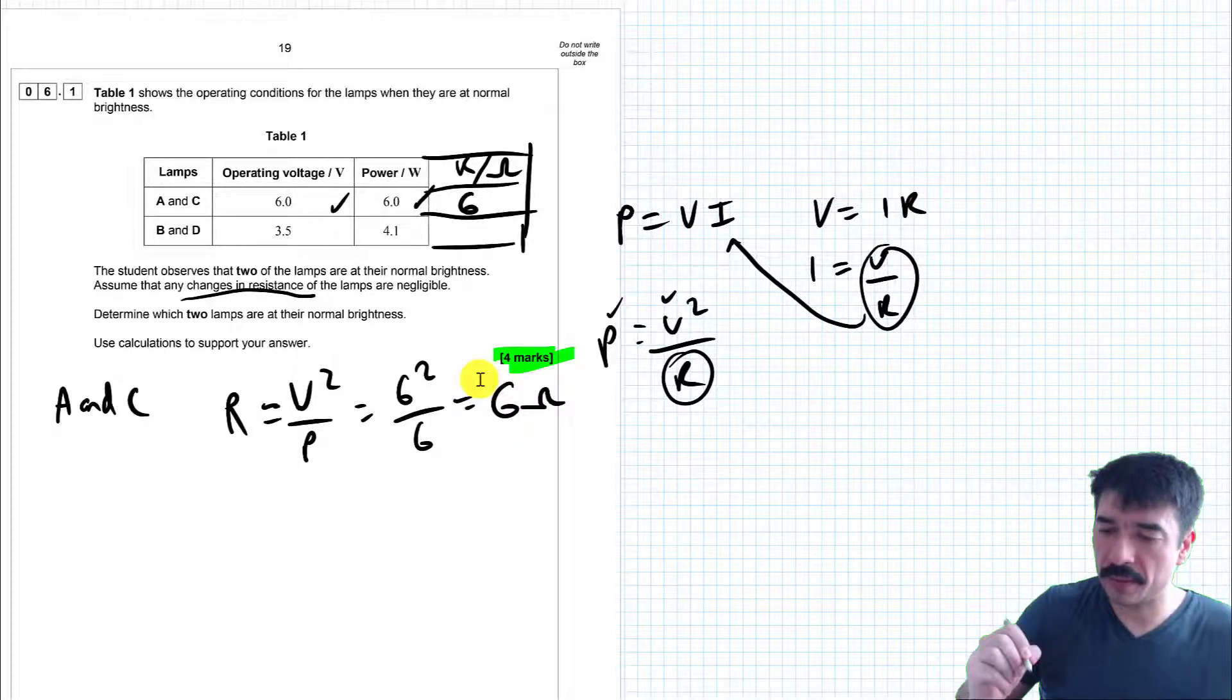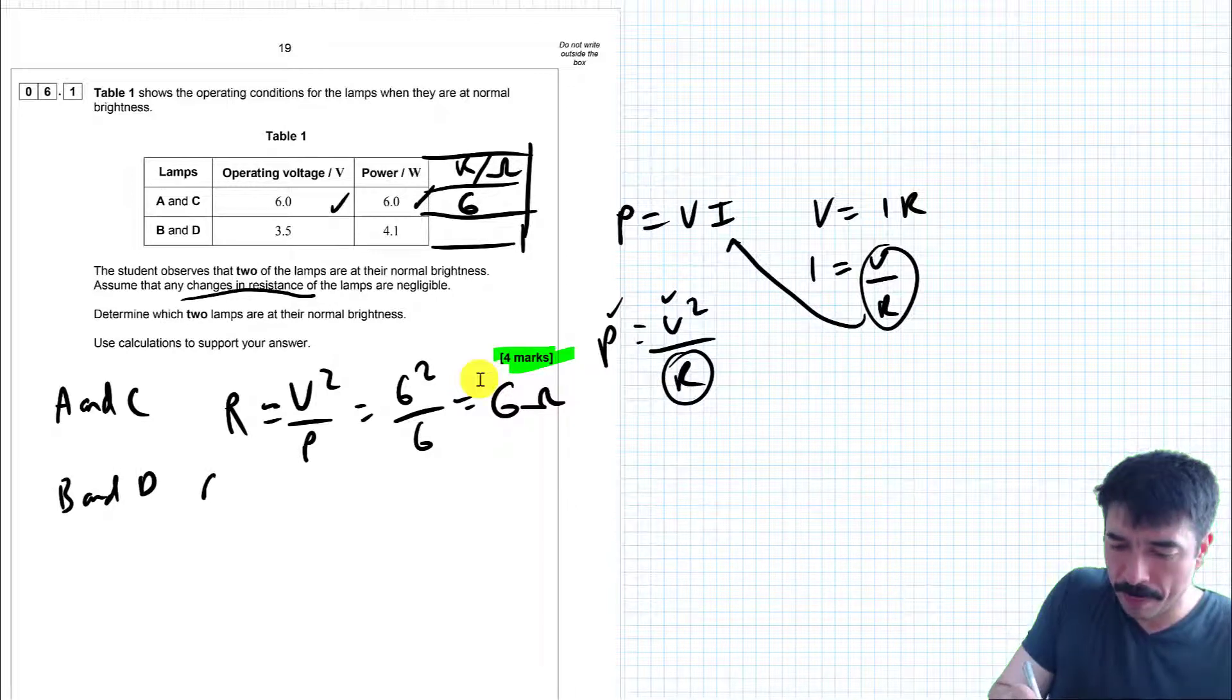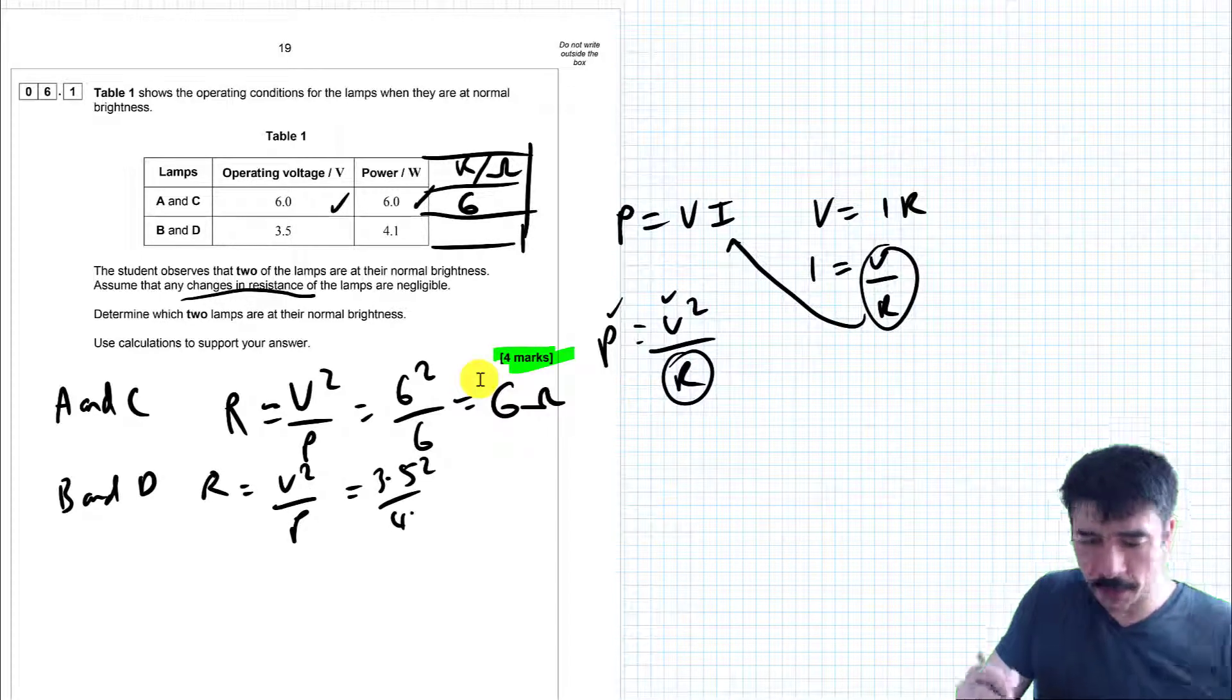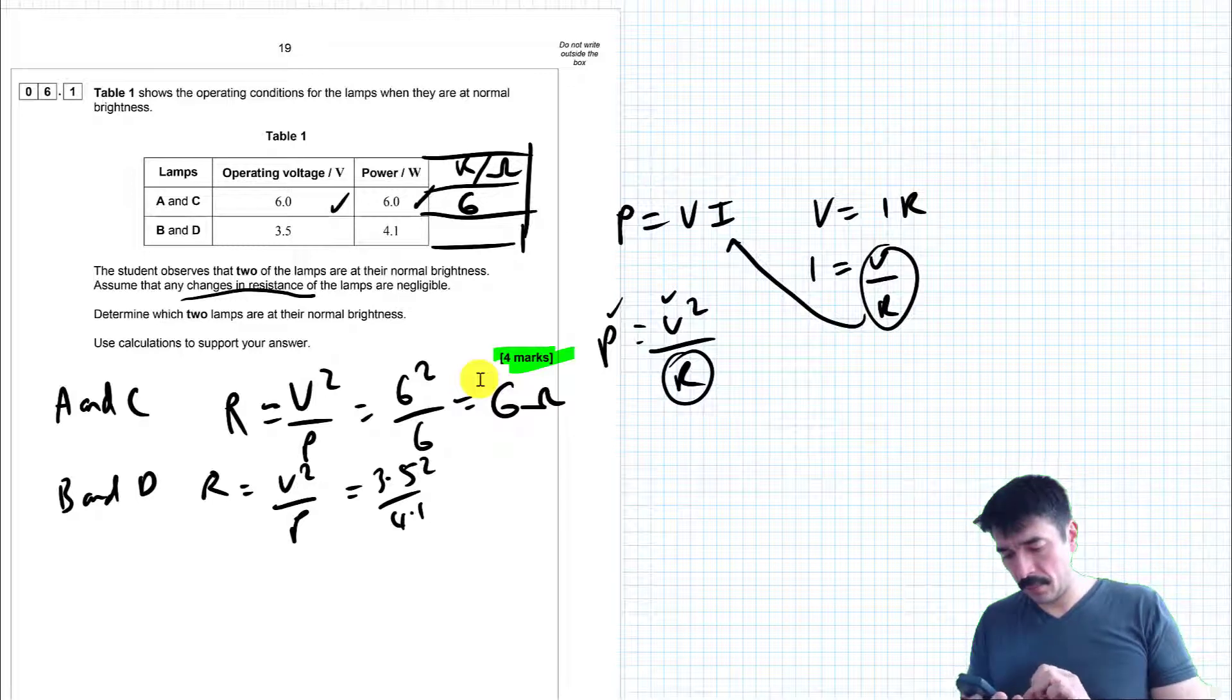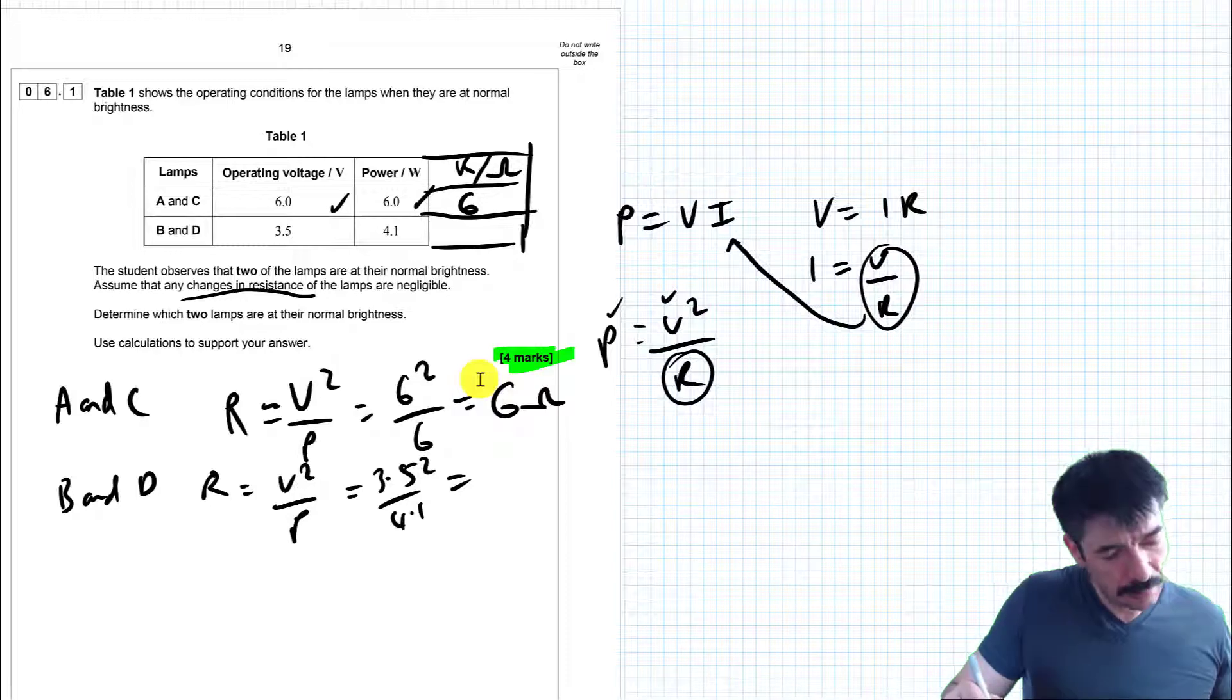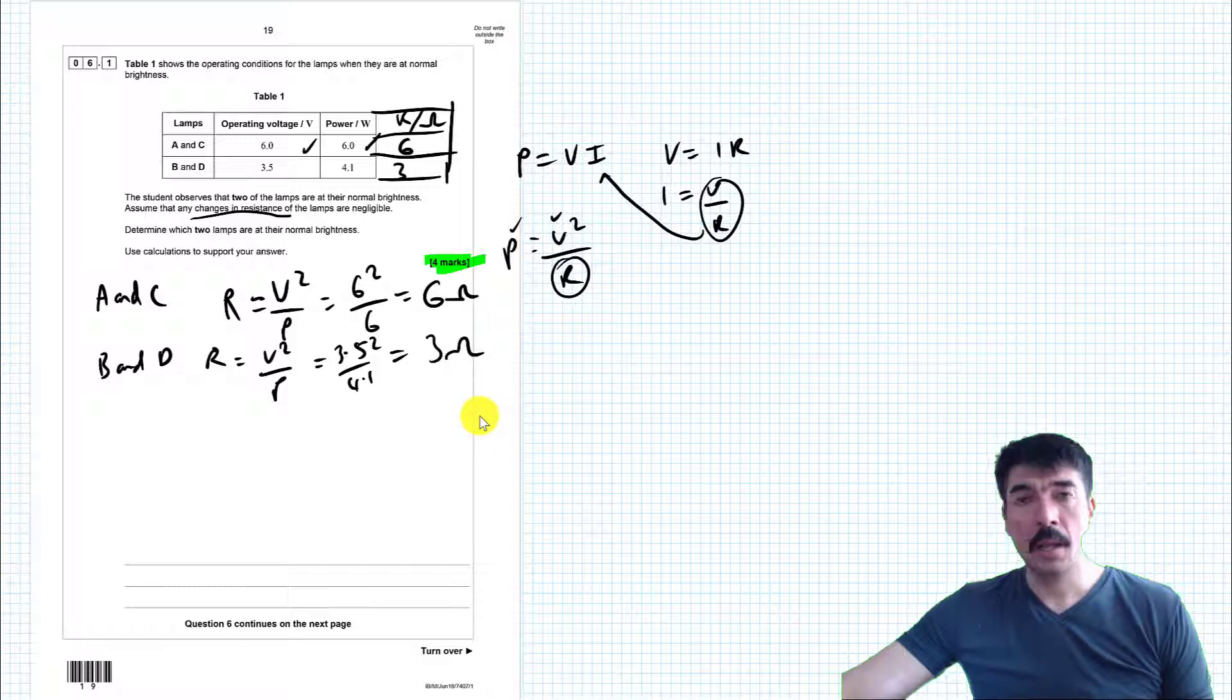So let's do for A and C. So for A and C, let me rearrange this for R. So R will equal, resistance will equal V squared over P. So I need to do 6 squared over 6. So that's going to be 6 Ohms. So resistance of bulbs A and C is 6 Ohms. That's pretty handy to know. Let's work out the resistance for B and D. 3.5 squared over 4.1. 3.5 squared divided by 4.1, 2.987 basically rounds to 3.